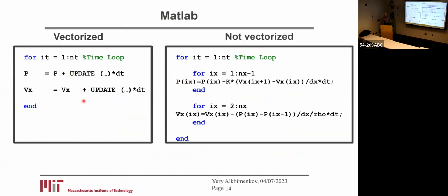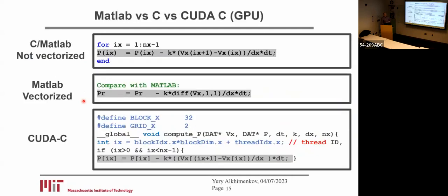The most important point is that there are two for loops: one to integrate in time and another to update all spatial locations. And here is actually the difference between C, MATLAB, and CUDA-C.